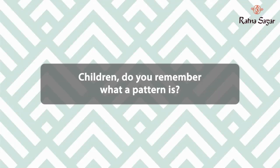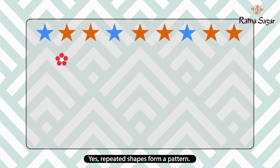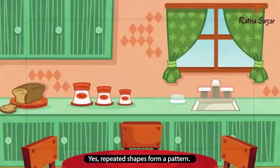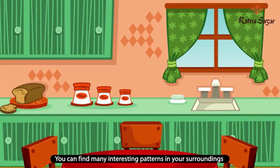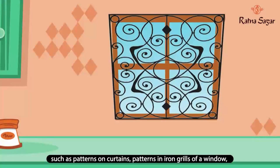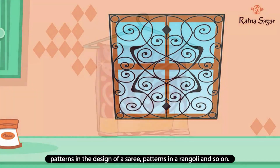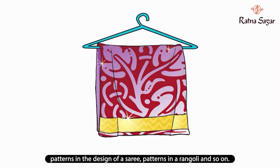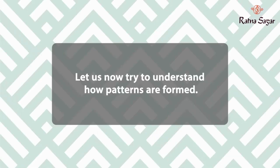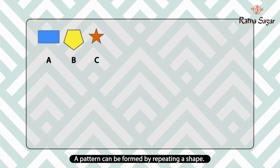Patterns — children, do you remember what a pattern is? Yes, repeated shapes form a pattern. You can find many interesting patterns in your surroundings, such as patterns on curtains, patterns in iron grills of a window, patterns in the design of a sari, patterns in rangoli, and so on. Let us now try to understand how patterns are formed.